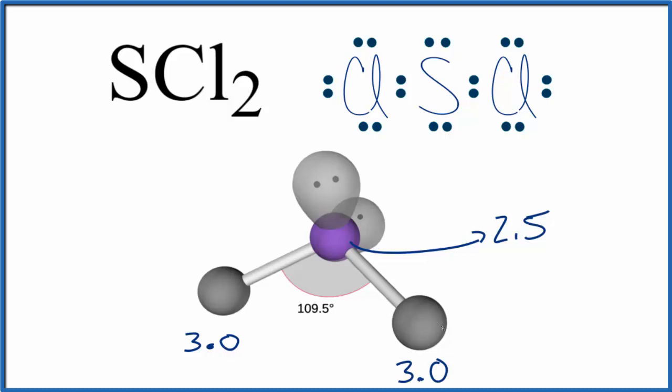We have the more electronegative chlorine atoms down here, and up here we have the sulfur. The side down here with the greater electronegativity will be negative, and up here by the sulfur, this side will be positive. So we have one side that has greater electronegativity.